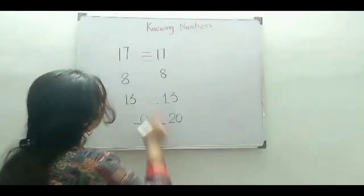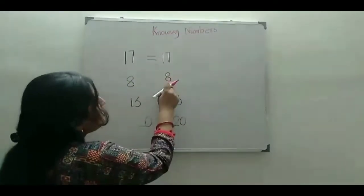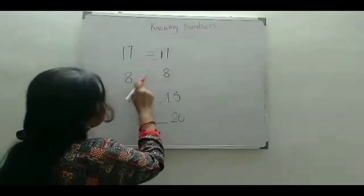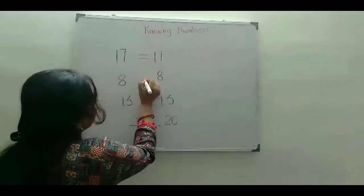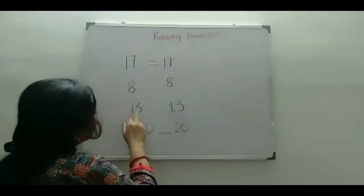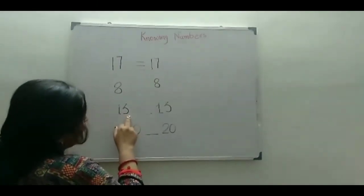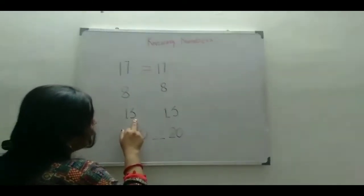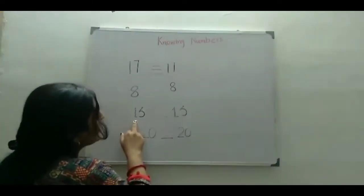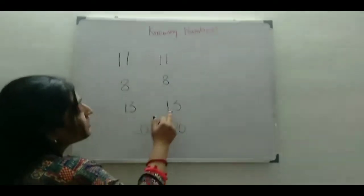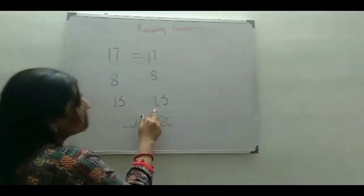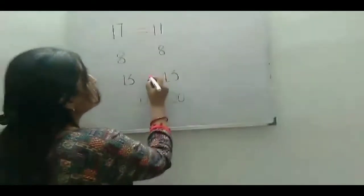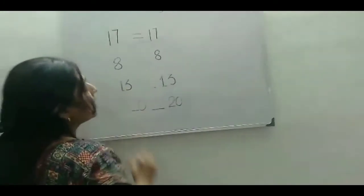Next number is 8 and here also 8, so 8 is equal to 8. The sign should be equal to. The next number is 1 ten and 3 ones. The ones number is 3 and the tens number is 1, so this is 13. Here also the ones number is 3 and the tens number is 1, so this number is also 13. So, 13 is equal to 13. The sign is equal to.